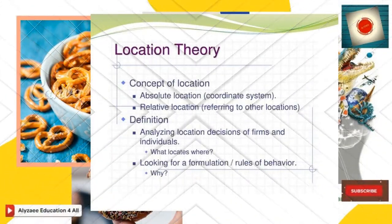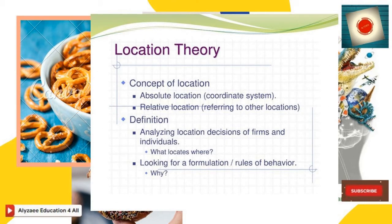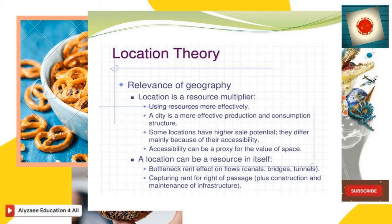The location theory: the concept of location is absolute location, meaning a coordinate system, and relative location, meaning referring to other locations. Analyzing location decisions of firms and individuals — what locates where — involves looking for formulations and rules of behavior, where the 'why' factor comes into action. The relevance of geography is that location is a resource multiplier, using resources more efficiently. A city is a more effective production and consumption structure, and some locations have higher sales potentials, differing mainly because of their accessibility.